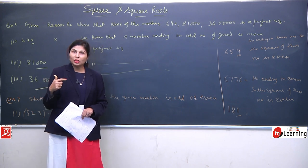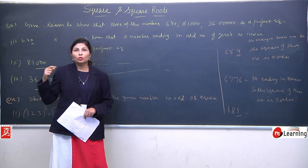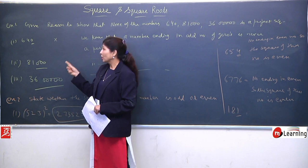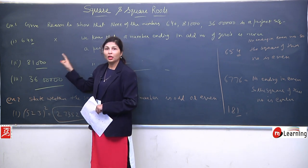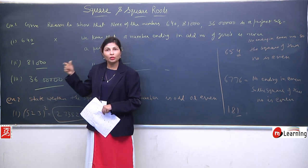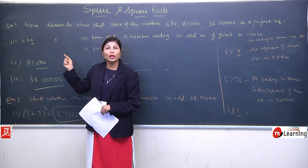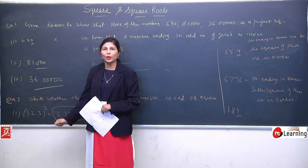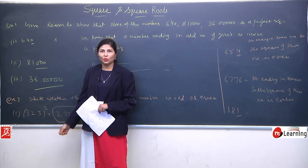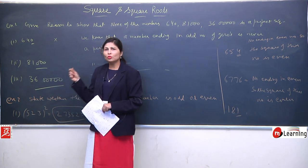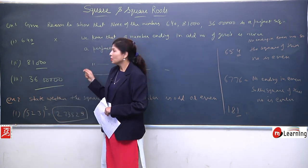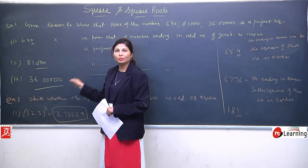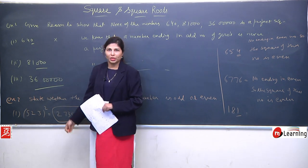Agar wo end by 0 ho raha hai, toh 0 ko hum count kar lenge ki wo kitne hain. Agar wo even hain toh chhod denge — odd hai toh again hum keh sakte ki wo perfect square nahin hoga. There are so many ways to solve this kind of simple questions.